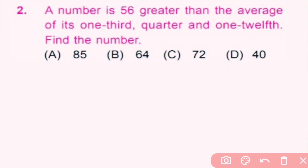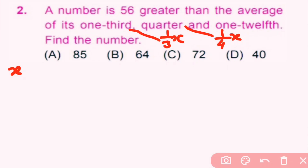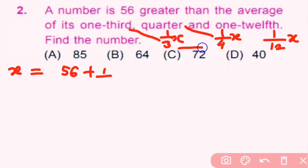Question number 2: a number is 56 greater than the average of its one-third, quarter, and one-twelfth. Find the number. Let the number be x. One-third of x is (1/3)x, quarter of x is (1/4)x, and one-twelfth of x is (1/12)x. According to the question, x equals 56 plus the average of one-third, quarter, and one-twelfth. To find the average we divide the sum of these three by 3.